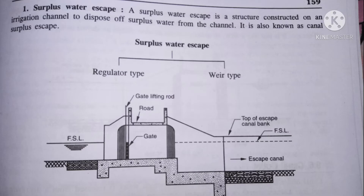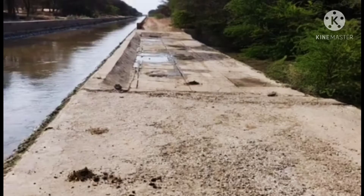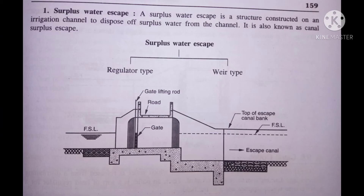So let's explain one by one. Sabse pahle hai surplus water escape. Jaisa ki maine aapko bataya, surplus water ka matlab hota hai extra water, jo ki heavy rainfall ke wajah se canal mein aa jata hai, aur canal ka jo level hai, woh increase ho jata hai. Is wajah se jo paani hai, woh bahar aana shuru ho jata hai. Jaisa ki aapko is picture mein bhi show ho raha hai, ki jo canal mein extra paani aa chuka hai, aur woh bahar aana shuru ho raha hai. Ye problem ya toh breakage ke wajah se hoti hai, ya toh heavy rainfall ke wajah se hoti hai. So is water ko bahar nikalne ke liye, surplus water escape ko construct karte hain.